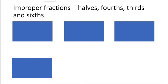Remember, improper fractions are fractions that have a numerator — that's the top number — which is larger than the denominator, that is the bottom number. For example, four halves. It's improper because fractions are usually less than one whole.